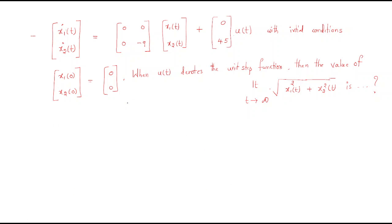Now we move to the next problem. The state equation is given with two state variables x1(t) and x2(t), matrix with entries [0, 1; -9, 0], input 45·u(t), and initial conditions x1(0) = 0, x2(0) = 0, where u(t) denotes the unit step function.